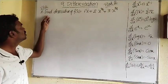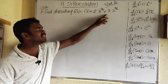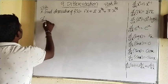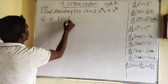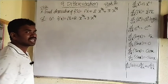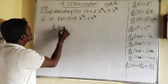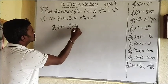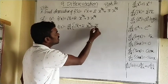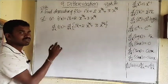First problem — very short question. Find the derivative of f(x) = √x + 2·x^(3/4) + 3·x^(5/6). Solution: given f(x) = √x + 2·x^(3/4) + 3·x^(5/6). We apply d/dx to both sides: d/dx of f(x) = d/dx of √x + d/dx of 2·x^(3/4) + d/dx of 3·x^(5/6).